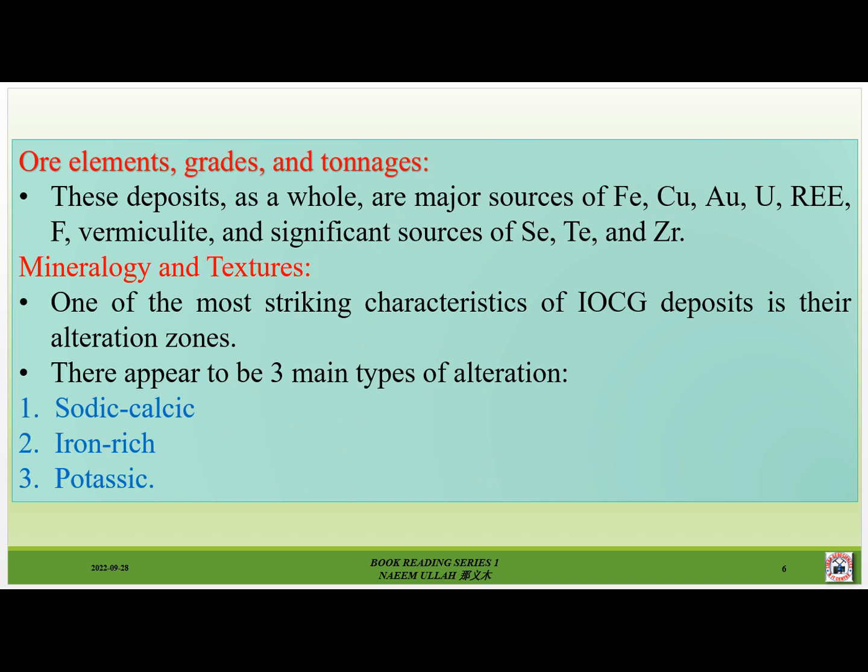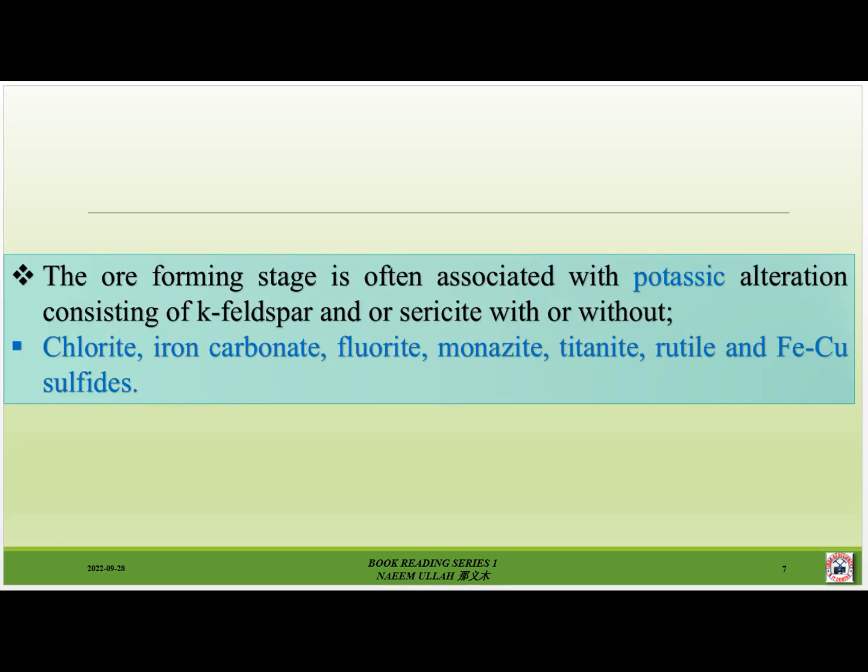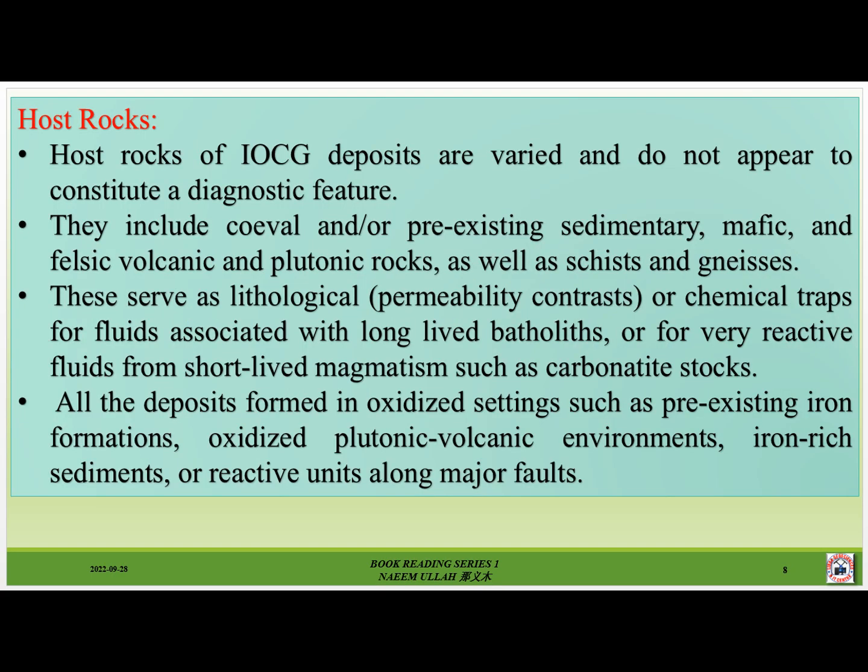One of the most striking characteristics of IOCG deposits is their alteration zones. There appear to be three main types of alteration: number one, sodic-calcic; number two, iron-rich; and number three, potassic. The ore-forming stage is often associated with potassic alteration, consisting of K-feldspar and/or sericite, with or without fluorite, iron carbonate, fluorite, monazite, titanite, rutile, and iron-copper sulfides.